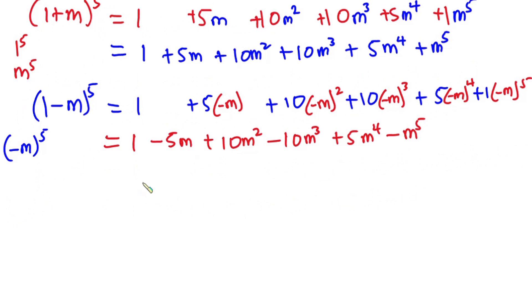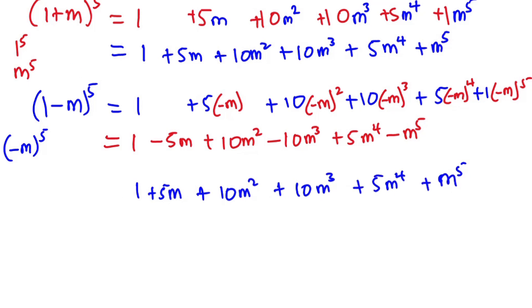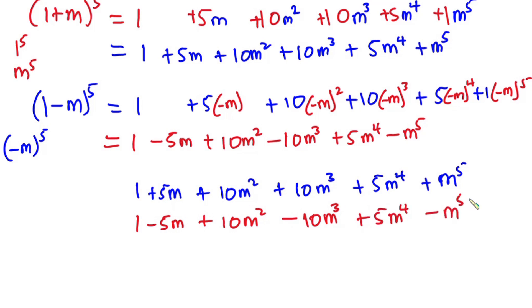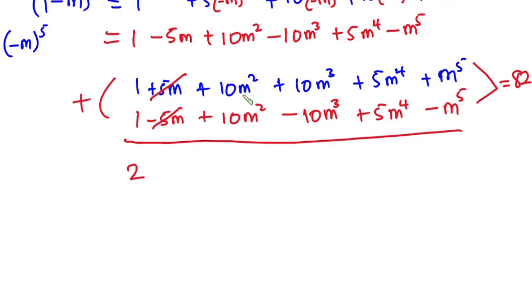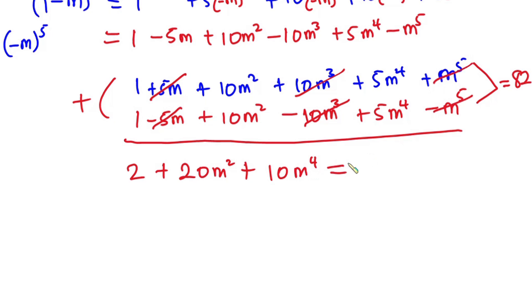Now let's add the two expansions together and set equal to 82. Adding term by term: 1 + 1 = 2; the 5m terms cancel; 10m² + 10m² = 20m²; the 10m³ terms cancel; 5m⁴ + 5m⁴ = 10m⁴; the m⁵ terms cancel. So we get: 2 + 20m² + 10m⁴ = 82.